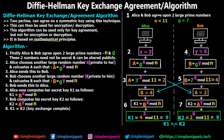Step six: Alice computes her secret key K1 = B^X mod N = 4^3 mod 11 = 9. Step seven: Bob computes his secret key K2 = A^Y mod N = 2^6 mod 11 = 9. Finally, key exchange is successful — K1 and K2 both equal 9, which means both Alice and Bob have arrived at the same shared key.